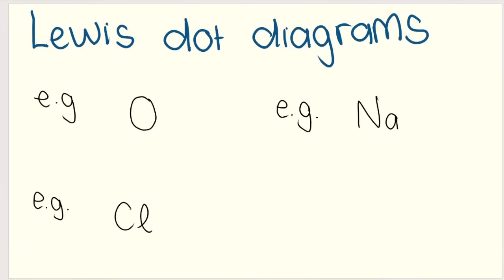When we draw Lewis dot diagrams, we use symbols to represent the valence electrons. Oxygen has six valence electrons, so you would draw six dots: one, two, three, four, then start at the top again, five, and six. That's how you draw the Lewis dot diagram for a single atom. Sodium has one, so you draw one. Chlorine is seven, so you draw one, two, three, four, five, six, seven.